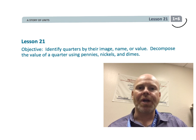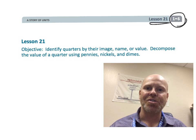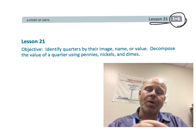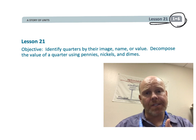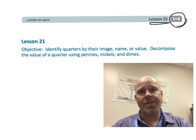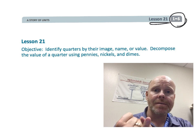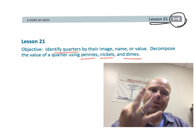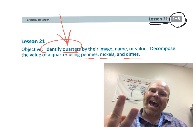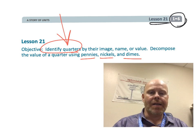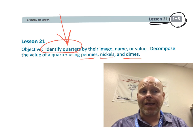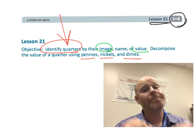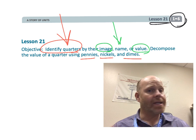All right, this is first grade, module 6, lesson 21. And in this lesson, we're continuing from our previous lesson. In our previous lesson, we learned about pennies, nickels, and dimes. In this lesson, we're going to continue with those three coins, plus we're going to add in understanding how to recognize and the value of a quarter. So let's get started.